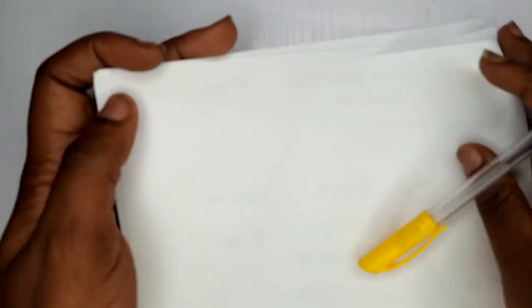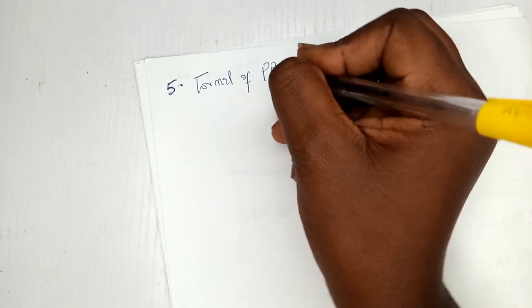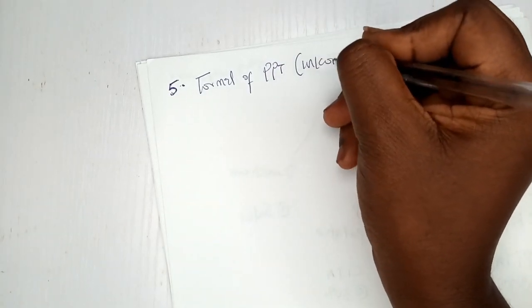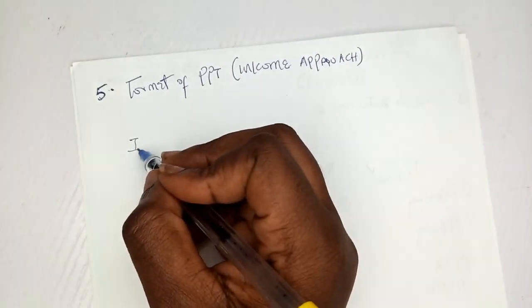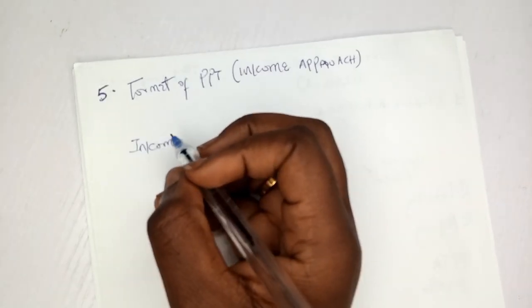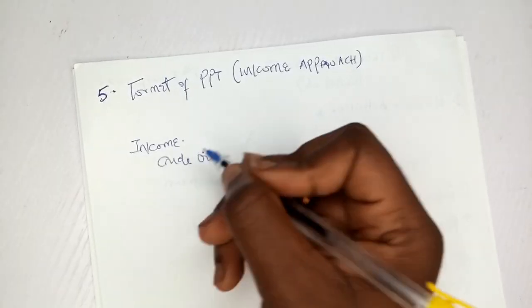Now the format for PPT. Starting with the income approach — the most common — you begin with income. Income consists of: crude oil exported, crude oil domestic sales, natural gas sales, and other or miscellaneous income. You sum these to get total income, then deduct your expenses such as admin expenses, production expenses, and transportation expenses relating to upstream.